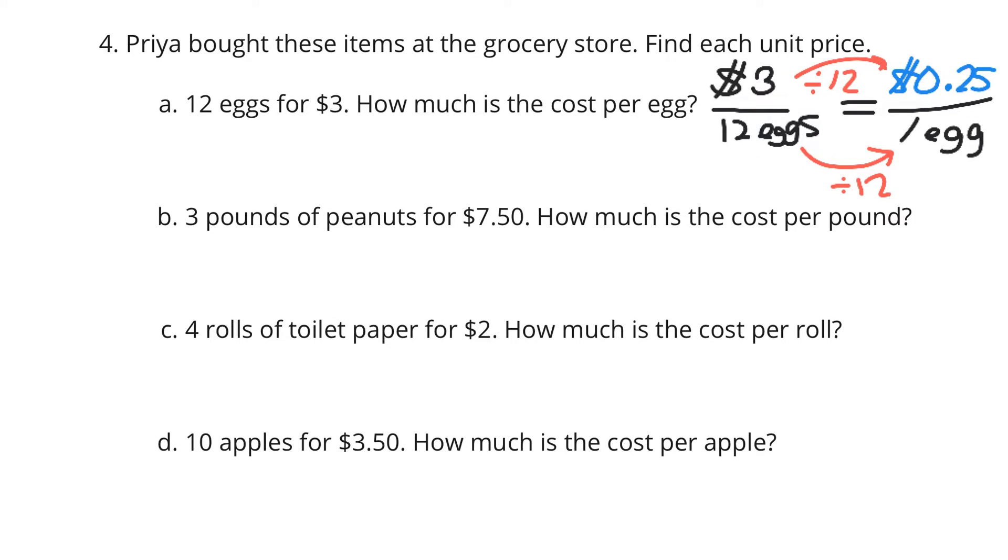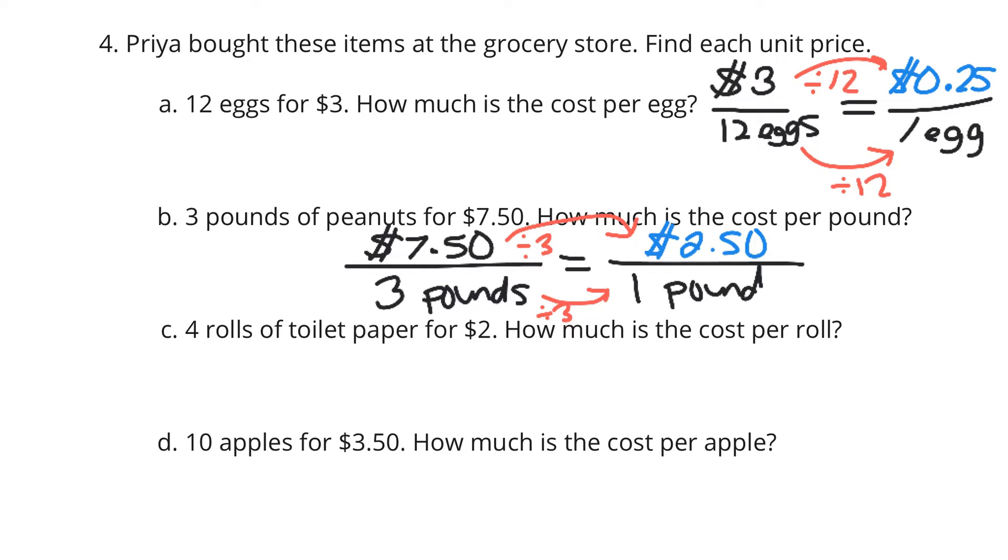3 pounds of peanuts cost $7.50. Cost per pound. So $7.50 over our 3 pounds. Once again, we need to figure out how much 1 pound costs. Well, we're taking 3 and dividing it by 3 to get to 1 pound. And so $7.50 divided by 3 here will give us the solution, which is $2.50 for 1 pound of peanuts.